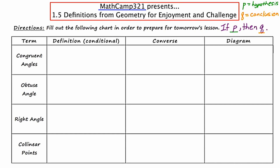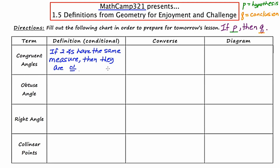Going back to our first definition — congruent angles — I'm going to present this definition in if-then form, giving you the conditional: if two angles have the same measure, then they are congruent. I've used some abbreviations: the angle symbol instead of writing the word 'angle,' and the congruent symbol instead of writing the word 'congruent,' just to make life a little bit easier.